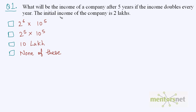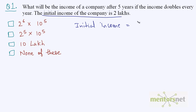What will be the income of a company after 5 years if the income doubles every year and the initial income is given, which is 2 lakhs? So the initial income is 2 lakhs, which is 2 into 10 raise to power 5 rupees.